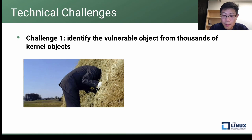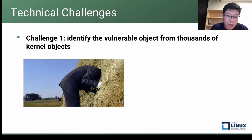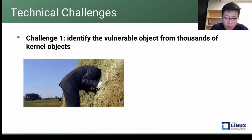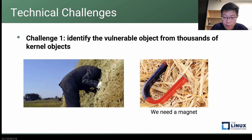The idea is quite simple, but implementing it is very challenging. The first technical challenge is how to identify the vulnerable object. The Linux kernel has millions of lines of code. Statically, the number of kernel structures is over 6,000, while dynamically, the number of kernel objects at runtime is over 100,000. Among so many kernel objects, only one or two are vulnerable and can cause corruption. We need to develop techniques to identify them and separate them to the V-Malloc region — it's like finding a needle in a haystack, so something like a magnet would be very helpful to determine whether an object is worthy of separation.